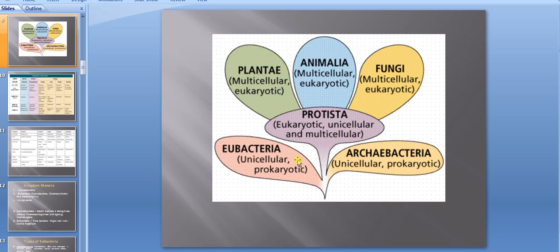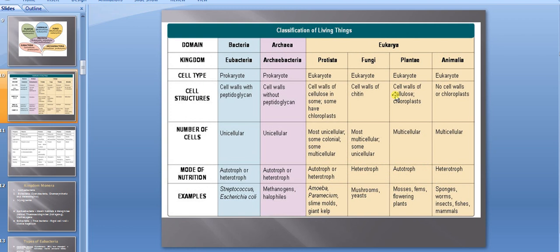Monera is divided into two classes: Eubacteria and Archibacteria. Both are unicellular and prokaryotic. Protista are eukaryotic and can be unicellular or multicellular. If someone asks which kingdom is unicellular prokaryotic, the answer is Monera. If asked which is unicellular and multicellular eukaryotic, the answer is Protista. Plantae, Animalia, and Fungi are all multicellular eukaryotic, but there is one unicellular eukaryotic example in Fungi — that is yeast.